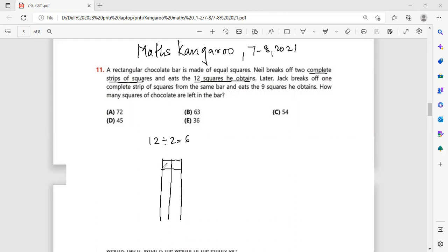So let's draw this. So one, two, three, four, five and six. So that means here he had six chocolates and six chocolates. So these are the two strips.